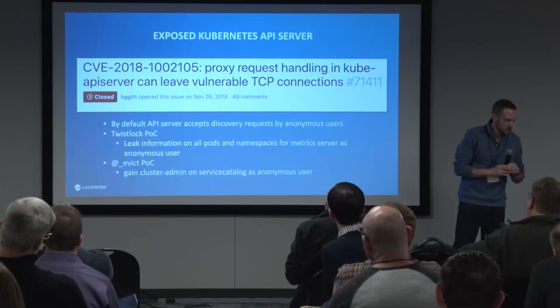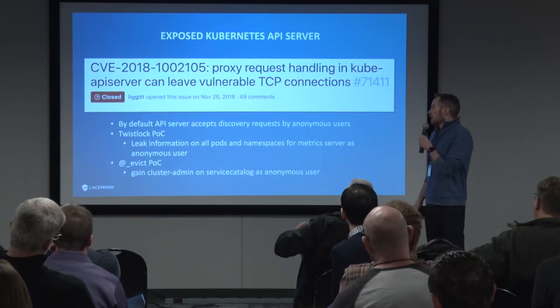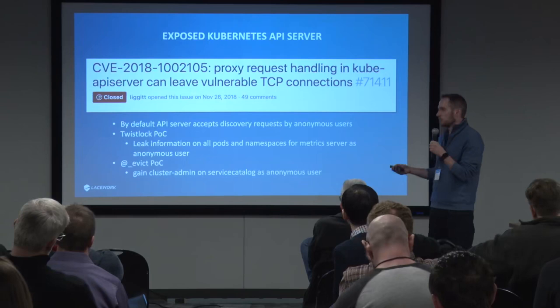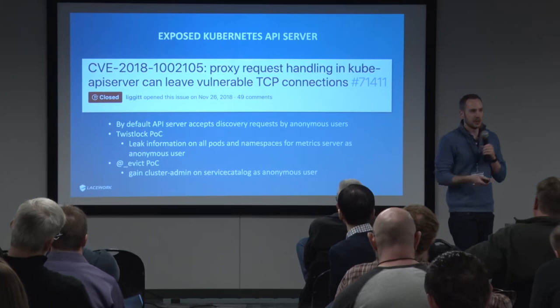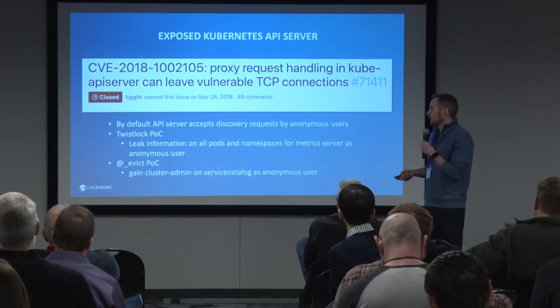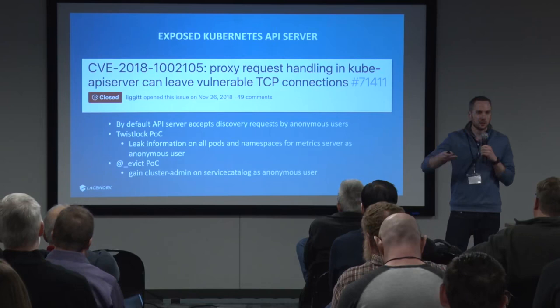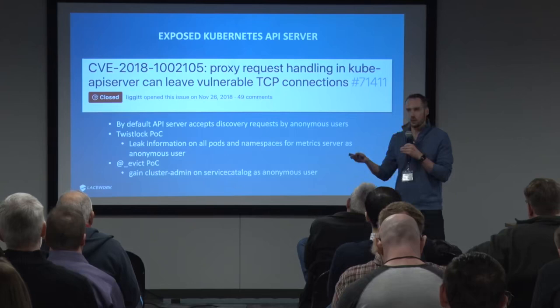Moving on from dashboards: the Kubernetes API server is the heart and soul of the cluster. You don't want it exposed to the internet, but there are authentication and authorization mechanisms in place. When a big CVE like the one that came out in December arrives, you run into issues. At the core of this CVE, there are two major issues. Someone can issue a legitimate request, then try to upgrade to WebSockets, keep open a TCP connection, and bypass future authorizations.